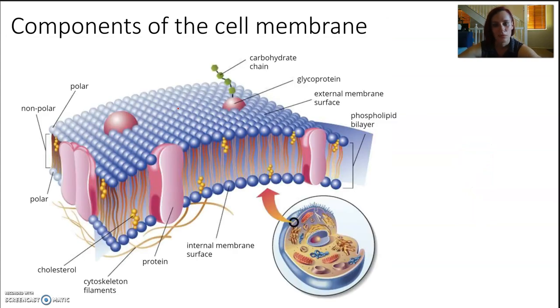So the components of a cell membrane. There are some major ones that we really need to focus on. Number one is the phospholipid bilayer. So all these little blue heads and all their red stringy-looking tails that are dangling down.